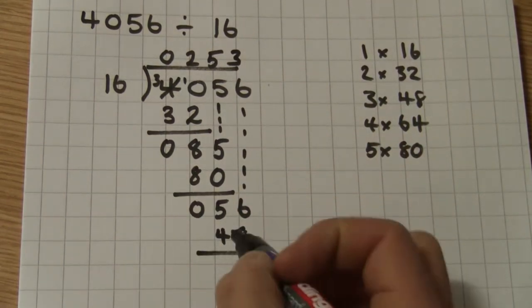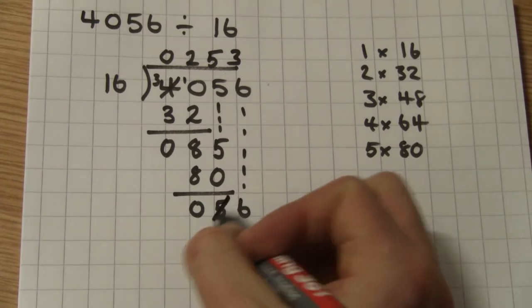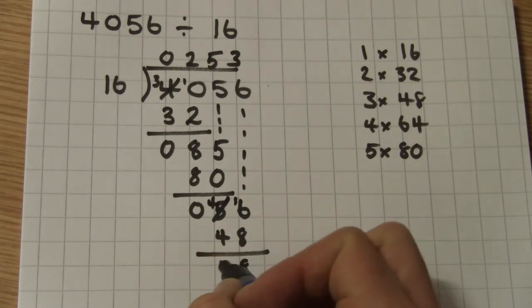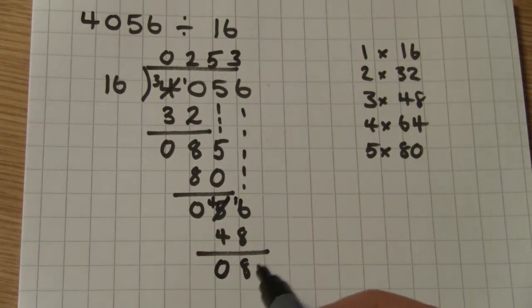I write my 48 below. I'm going to subtract again. But this time, it's clear I'm going to be left with a remainder. So I steal from my 5. 16 take away 8 is 8. Four take away four is zero. Now I'm left with a remainder of 8.